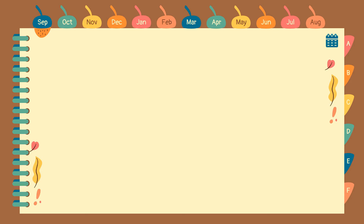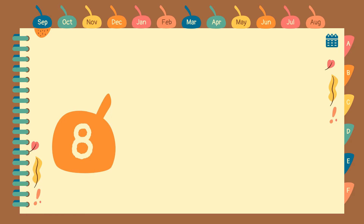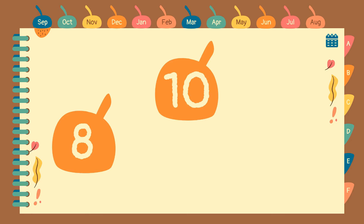To start with our lesson for today, kids, we're going to identify the following numbers. Get ready! Let's have the first number. What number is this? Very good! Number 8. How about the next number? Number 10! Good job! And the last number? Very good! It's number 1.